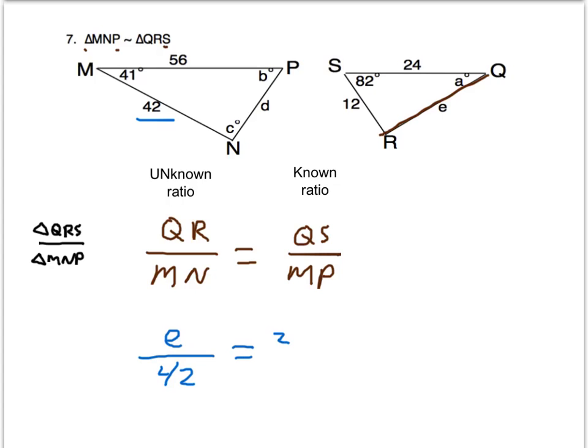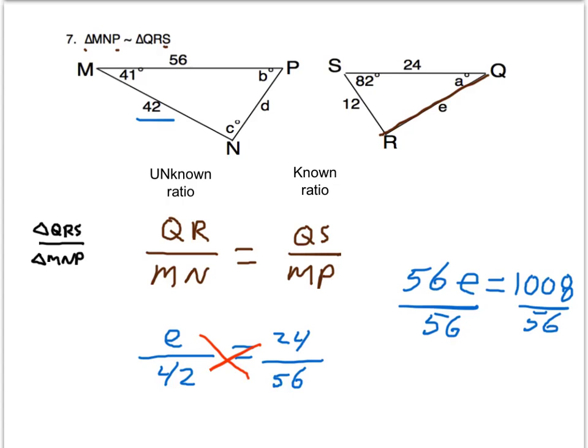Over MP, which is 56. So let's cross-multiply. And then if we divide by 56 on both sides, we get that E equals 18.